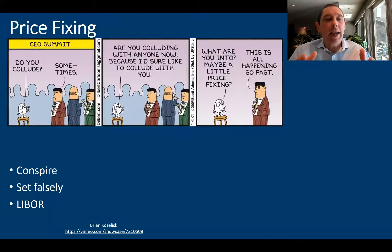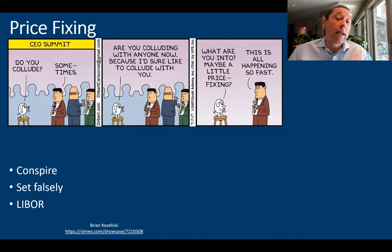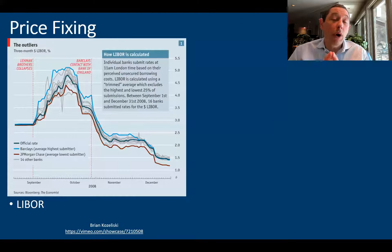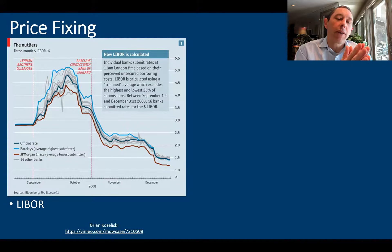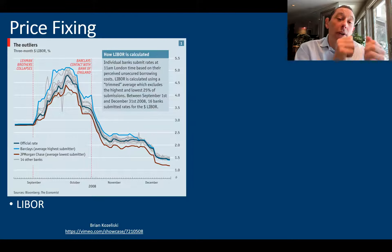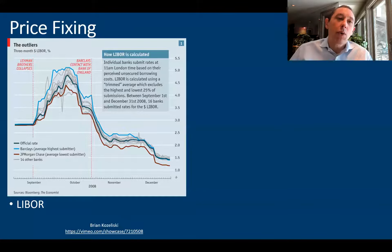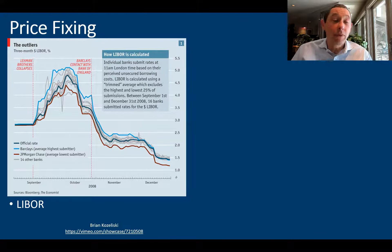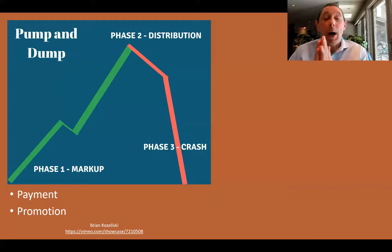Price fixing is kind of what it sounds like — a group of people get together, conspire, and falsely set prices, breaking down price discovery. A classic example this century was the LIBOR scandal, where all these banks got together and colluded to set the LIBOR prices. It's supposed to work by independently letting regulators know what their interest rates are so they can pool and average them into an actual LIBOR rate.